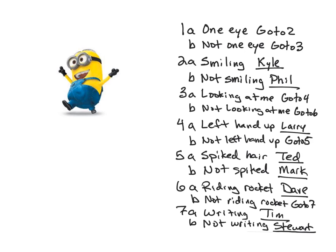So let me give you one last way that this is used. Let's say this little minion right here you've never seen before in your entire life and you're wondering what its name is. So we get our dichotomous key and we start out at the very top and make a decision. One A says does he have one eye or not one eye — he has not one eye, so we go to three. Three says looking at me or not looking at me — he is not looking directly at me, so we choose three B — go to six. Six: riding a rocket or not riding a rocket — he is clearly not riding a rocket, so we choose six B — go to seven. Seven says he's writing or not writing — he is not writing, so his name is Stuart. And we just used a dichotomous key to key out something that perhaps we had never seen before. And that is how we use dichotomous keys.